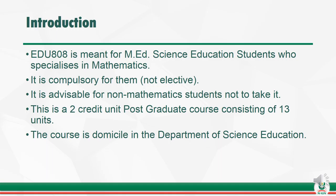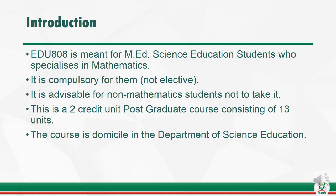This is a two-credit unit postgraduate course consisting of 13 units. The course is domiciled in the Department of Science Education. What you need to do to complete this course is: number one, read the 13 study units in the three modules; read reference books and other materials suggested in the course material and by the facilitator. Each unit may contain self-assessment exercises and tutor-marked assignments at certain points in the course, so you are required to study and exercise yourself in them.